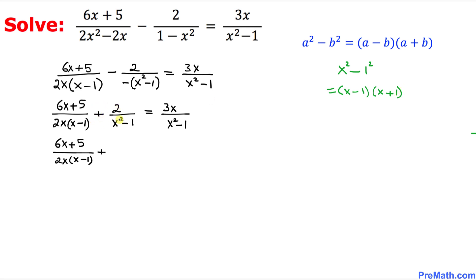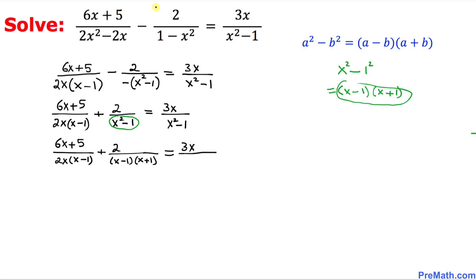Now focusing on the left hand side, we have 2 divided by (x squared minus 1), and we replace x squared minus 1 with its factored form (x minus 1)(x plus 1). On the right hand side, 3x divided by (x squared minus 1) is likewise replaced by (x minus 1)(x plus 1).